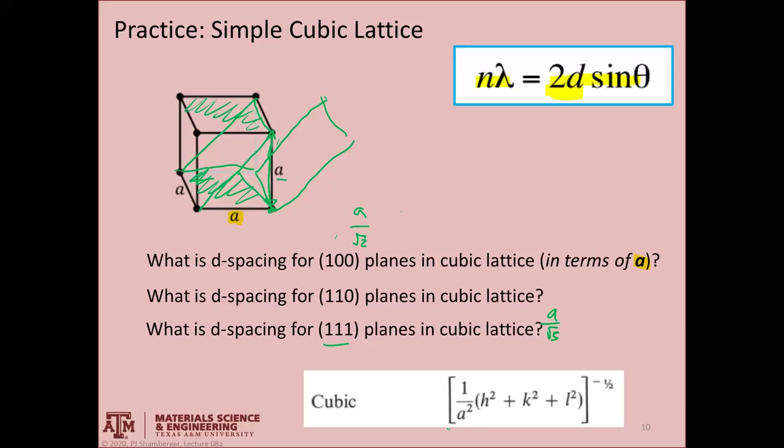This is a general expression that gives you the lattice spacing as a function of the index of a particular plane. And this holds just for a cubic structure. For example, for a 1,1,1 plane, h is 1, k is 1, and l is 1. So this whole term in here, 1 squared plus 1 squared plus 1 squared equals 3. Basically, I have 3 over a squared all to the negative one-half power. That is the same as the square root of a squared over 3, because it's to the negative one-half power. Or I could rewrite this as a over the square root of 3. So this expression will give you the spacing between any planes for any indices. Any family of planes, you can just drop the indices right in and determine the D-spacing. It's easier for a cubic lattice.